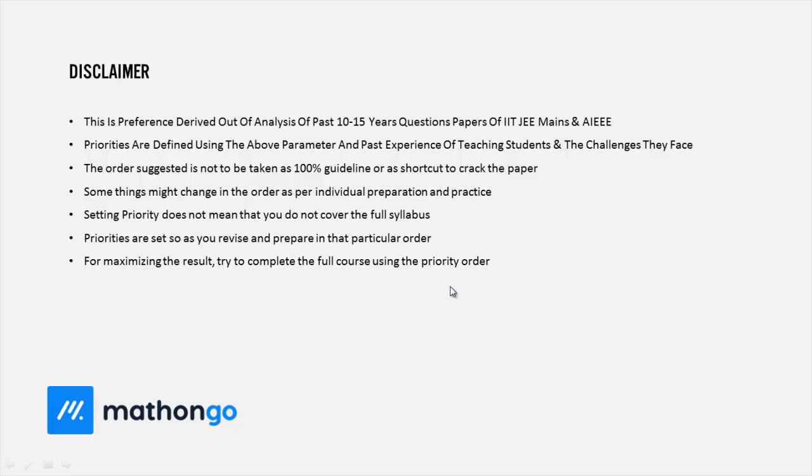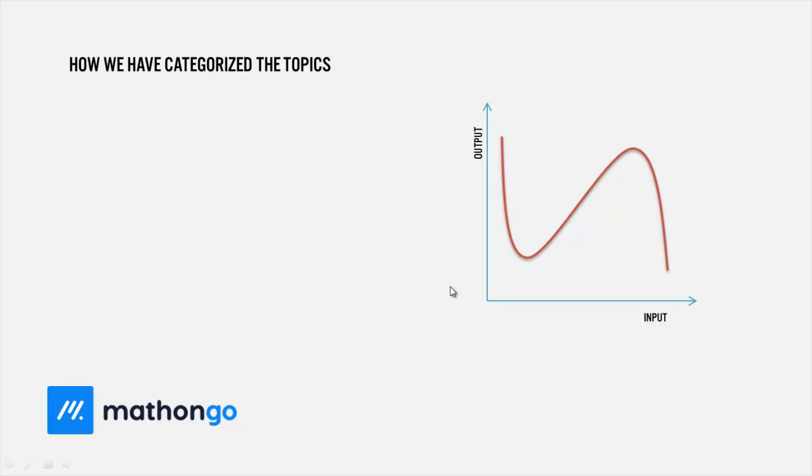Let's come to the priority. Obviously the graph you are seeing has on the x-axis the input - as x increases, input increases. The y-axis shows the output, that is marks or the result you are trying to achieve. As you go up the y-axis, result increases.